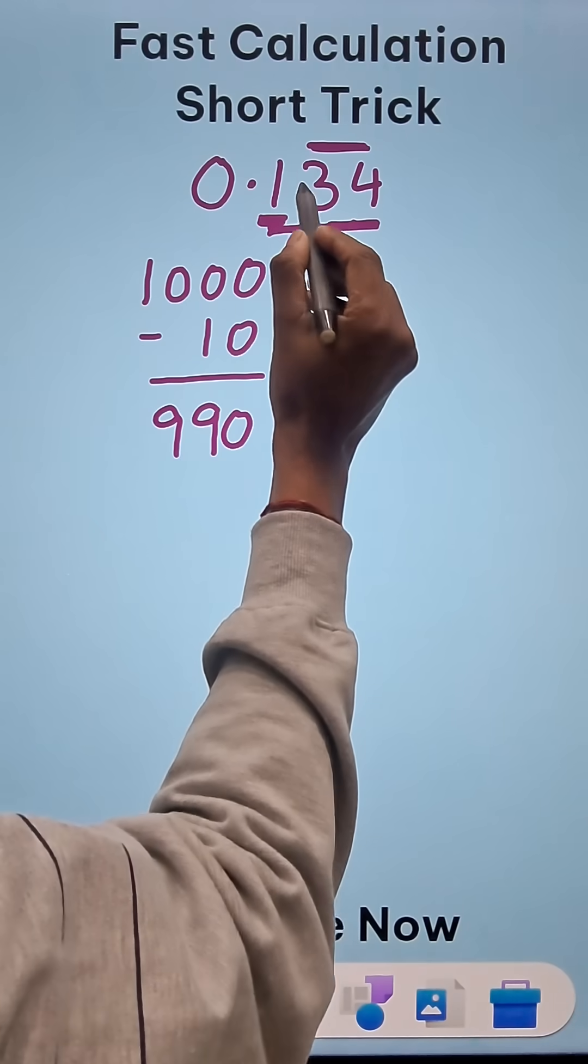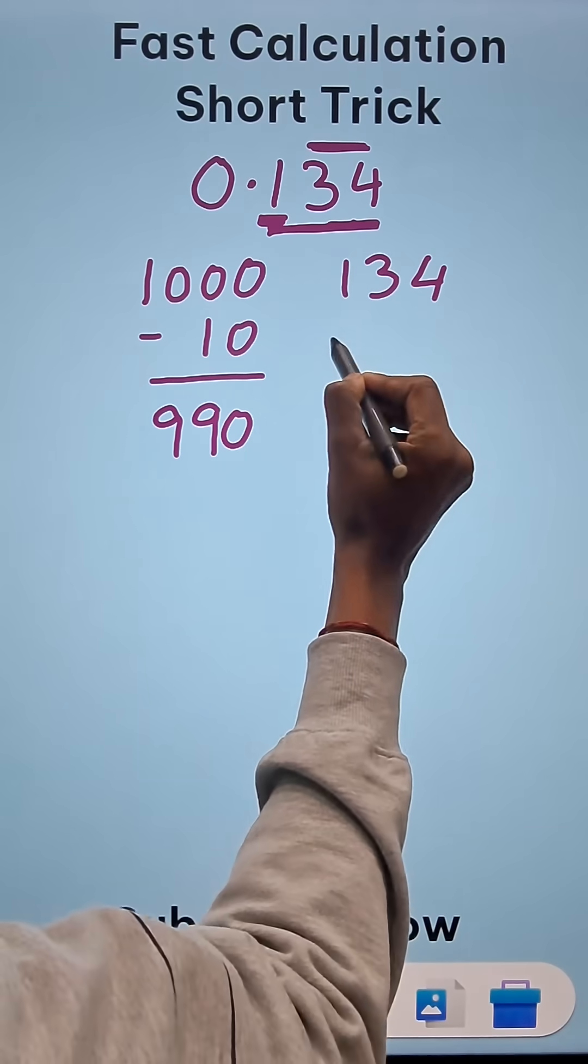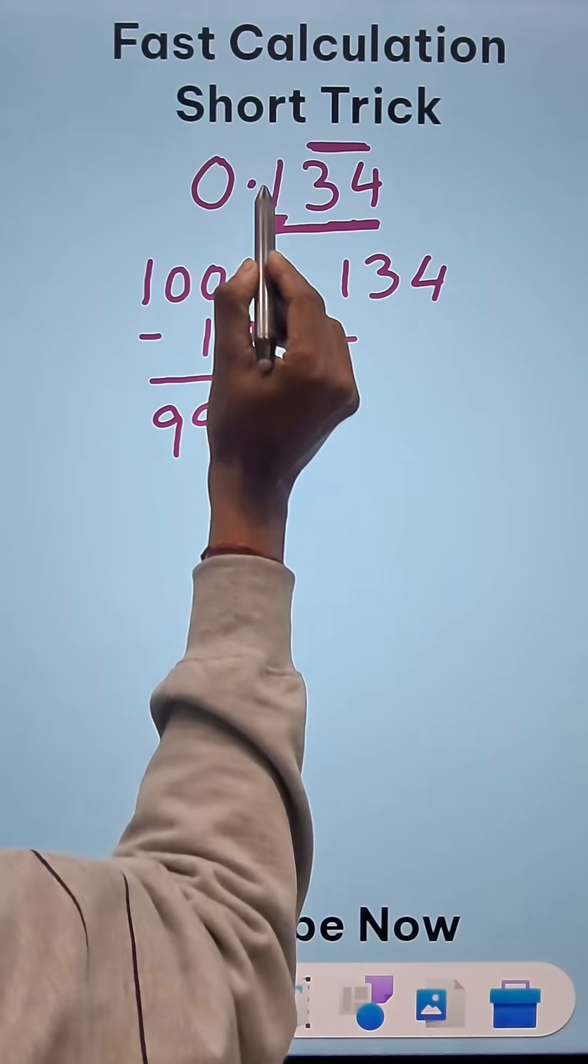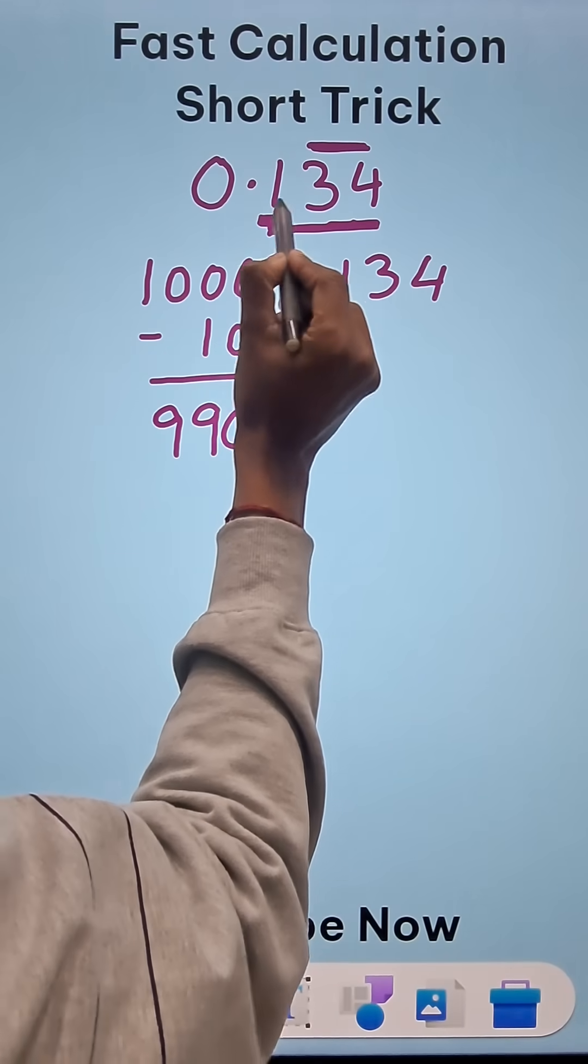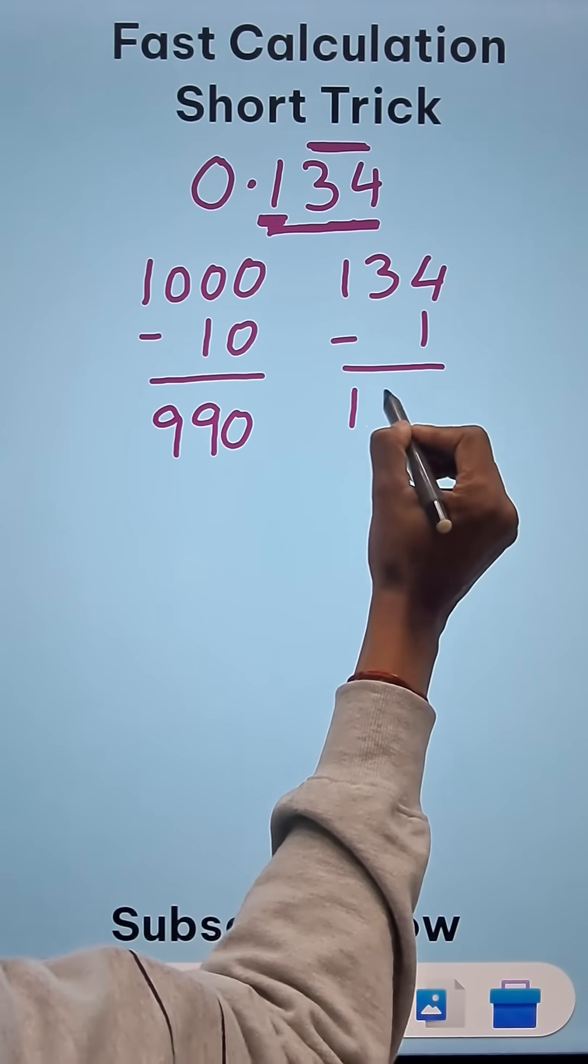On the other hand, this number 134 and you have to subtract something from that. What is that something? The number which doesn't have bar, that is 1. So you get 133.